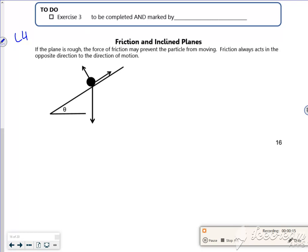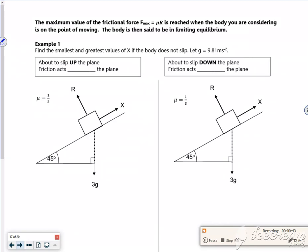Friction always acts in the opposite direction. Imagine this is moving down the slope, and friction will be stopping it. I've got F_r or F_max, I've got R, and I've got mg with its components there: mg cos theta, mg sin theta. They always act in the opposite direction.